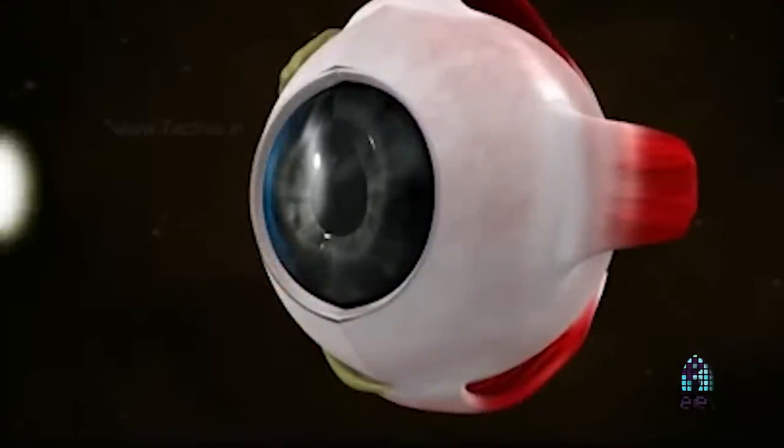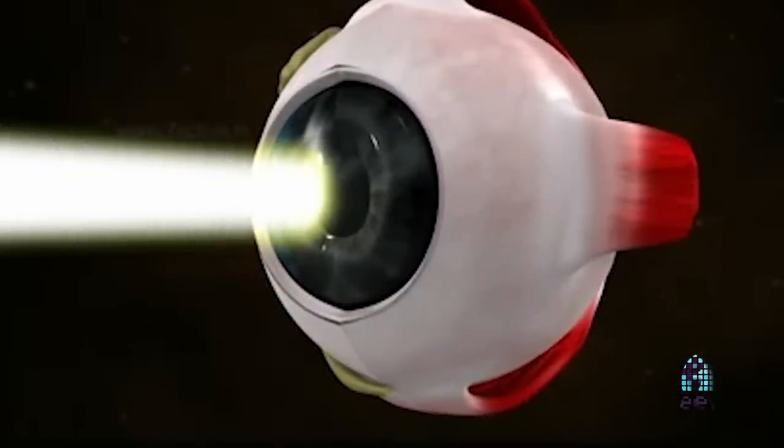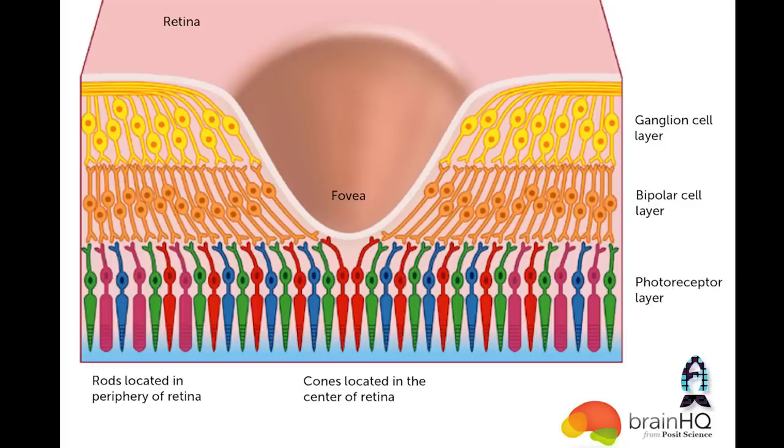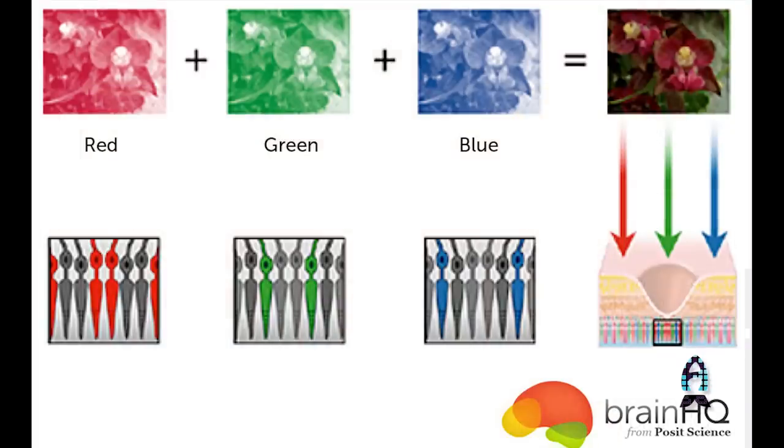Do you know what light really is? Obviously you know the core component, which is the photon. If you really consider what a photon truly is, it's a mechanism by which atoms and matter exchange energy. We don't actually see light. When the photon strikes the photoreceptors in the back of your eye, photochemical reactions take place, converting that energy into a signal that the brain then processes — kind of like a CCD on your camera. Very similar mechanisms. Even photosynthesis is a photochemical reaction.